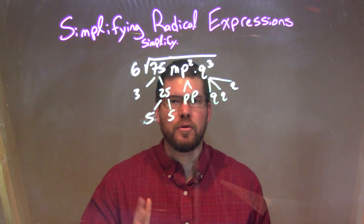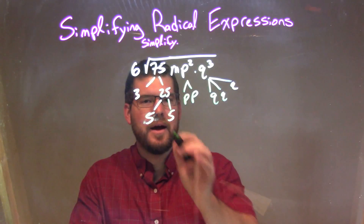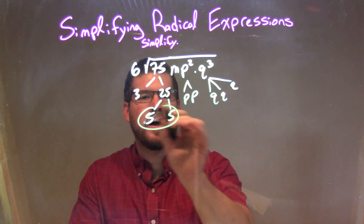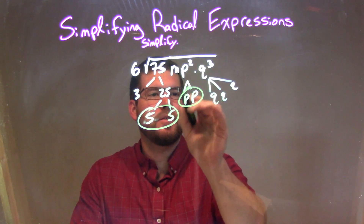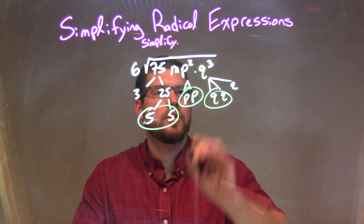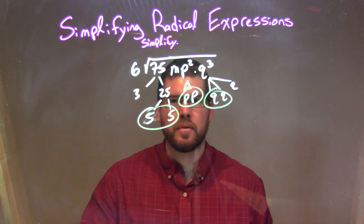So now let's go circle our pairs. I have a pair of 5s, a pair of p's, and a pair of q's.